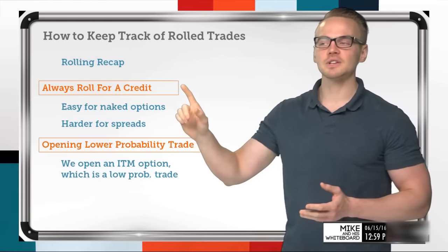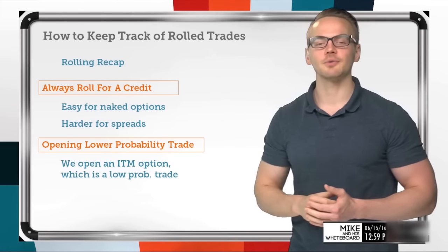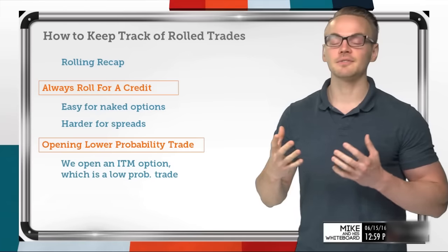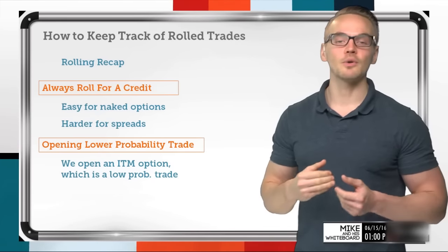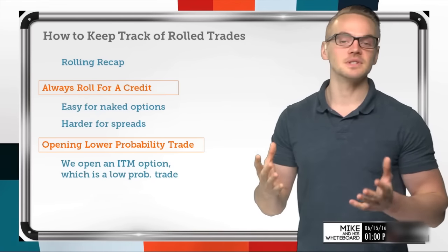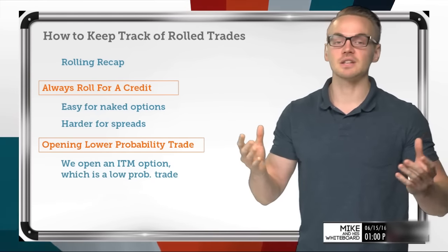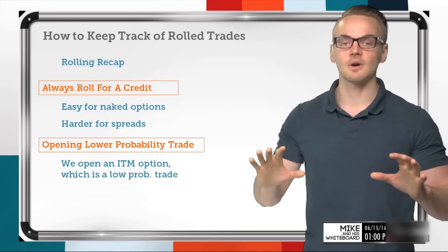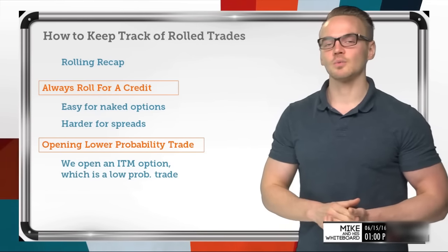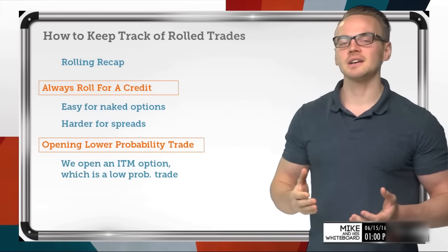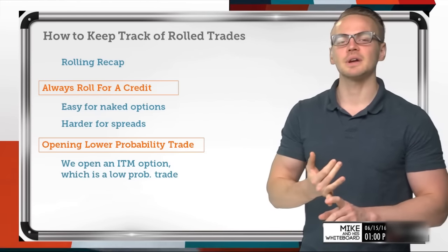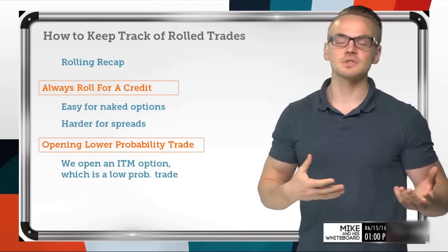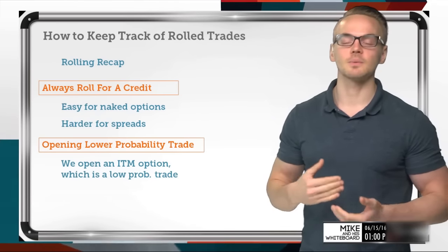Ideally we want to make sure that we're rolling for a credit. We always roll for a credit — at the very least we'll roll for a zero debit, so basically nothing, no credit, no debit, just zero. We always like to roll for a credit because it helps our break-evens and ultimately reduces our cost basis by doing so.